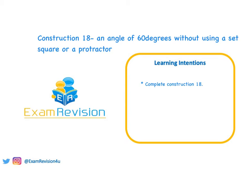Hi guys, in today's video we're going to be looking at construction 18 which is on the higher level and ordinary level leaving cert course and it is to construct an angle of 60 degrees without using a set square or a protractor.